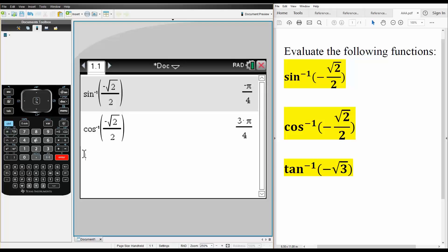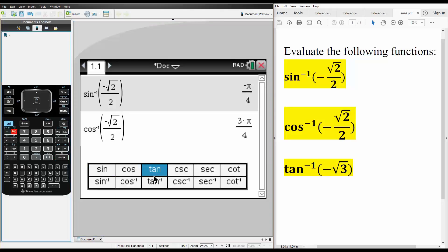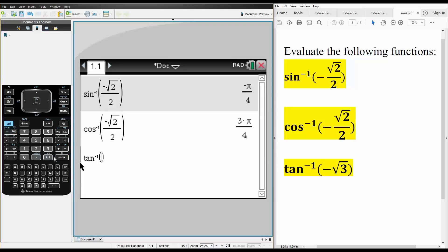Lastly, we want to do tan inverse, so we hit trig, we hit tan inverse, we do negative, we do control, the square root, and we do 3, we hit enter.